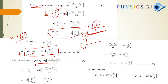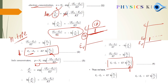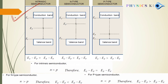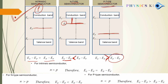For hole concentration (P-type): using the same technique — divide, take log both sides — we get EF − EV = KT × ln(NV/P). If hole concentration P is large, EF − EV is small, meaning EF is near EV. So for P-type material, the Fermi level is near the valence band. Drawing this diagram earns 6 out of 6 marks.